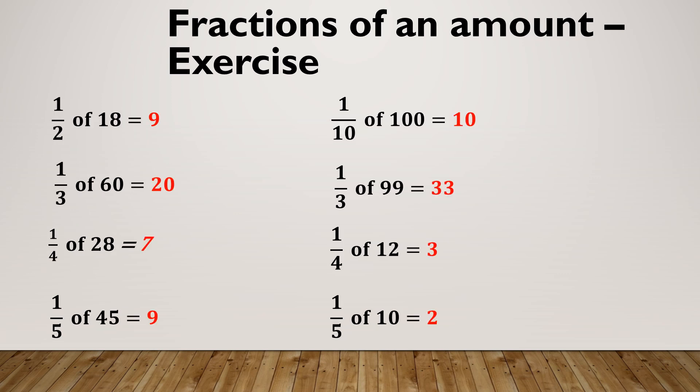Let's see how you got on. So 18 divided by two is nine. 60 divided by three is 20. 28 divided by four is seven. 45 divided by five is nine. 100 divided by 10 is 10. 99 divided by three is 33. 12 divided by four is three. And 10 divided by five is two.